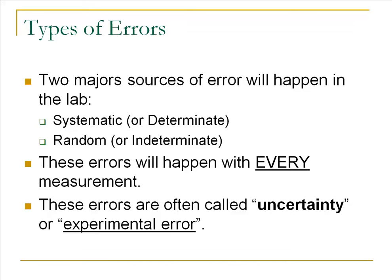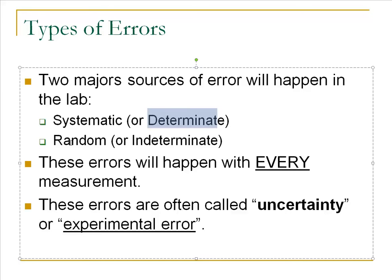We've also talked about the different types of errors. No one's really perfect, but there are ways we can get around that and make our numbers more reasonable — more confidence in the data we're producing. These two different types of errors are called systematic and random. Systematic errors are what we call determinate errors, and random errors are what we call indeterminate. So they go by both terms, and we've discussed this already in a previous video.